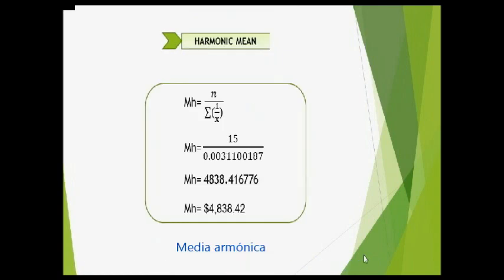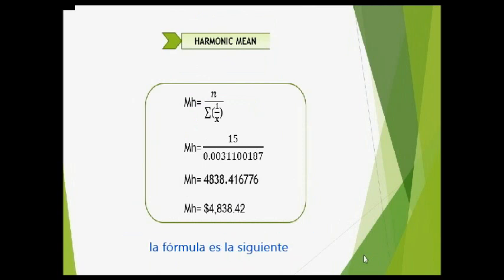Harmonic Mean: It is the inverse or reciprocal of the arithmetic mean. The formula is as follows, and the result is $4,838.42.